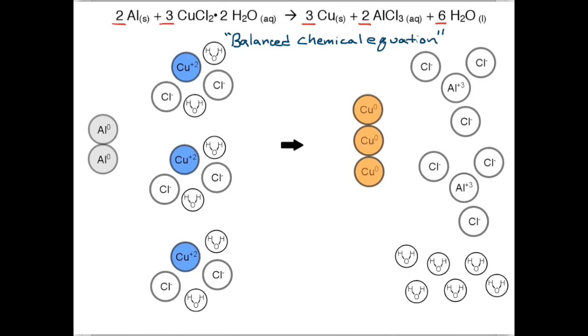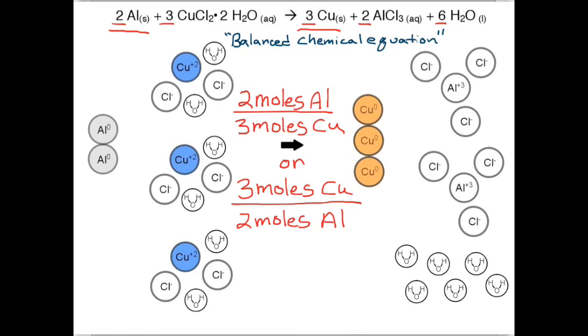In this lab, we're particularly interested in the relationship between the amount of aluminum that we start with and the amount of copper that we end up with. We can represent this relationship by writing 2 moles of aluminum per 3 moles of copper, or we could write it as 3 moles of copper to 2 moles of aluminum. These are also called molar ratios.